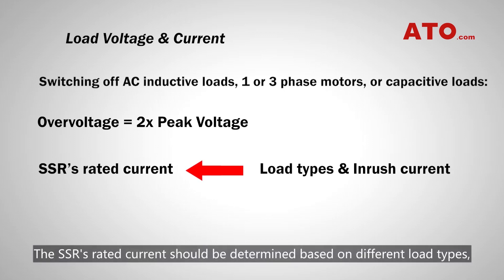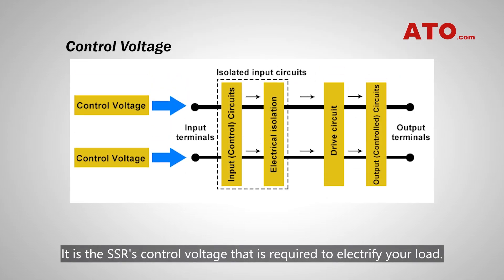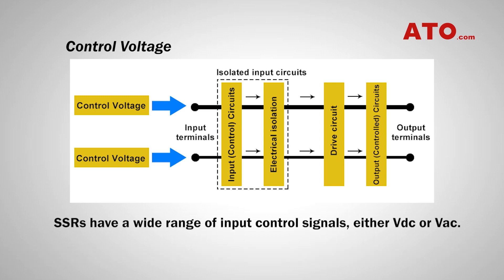The SSR's rated current should be determined based on different load types, depending on whether there is an in-rush current or not. Number 3: Determine the control voltage required to activate the SSR. It is the SSR's control voltage that is required to electrify your load. Unlike electromechanical relays, which are typically controlled by an unvaried voltage, solid-state relays have a wide range of input control signals, either VDC or VAC.